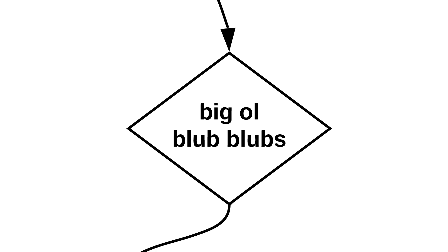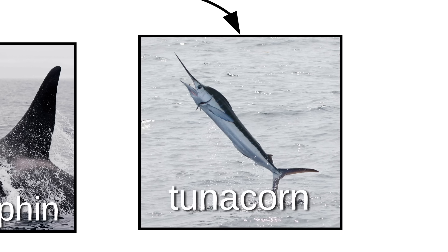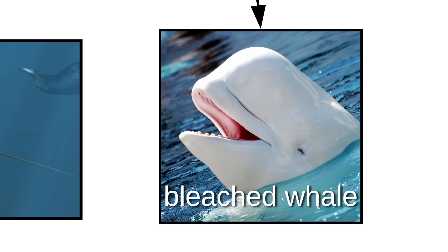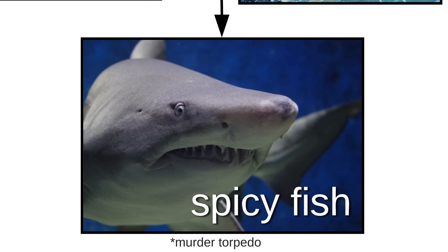Next come the big ol' blub blubs, like the tuxedo dolphin, tuna corn, toothpick-nosed pickled dolphin, bleached whale, and the toothiest blub blub of all, the spicy fish.